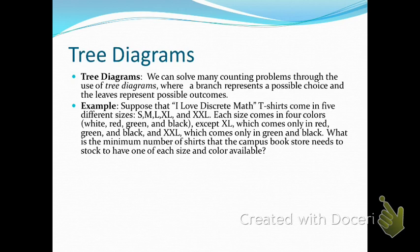If we want to know how many possible outcomes there are, we count up the leaves. This example says: suppose you have an 'I Love Discrete Math' t-shirt that comes in five different sizes — small, medium, large, extra large, and double XL. Each size comes in four colors: white, red, green, and black, except XL which only comes in red, green, and black, and double XL which only comes in green and black. What is the minimum number of shirts a campus bookstore needs to stock to have at least one of each size and color?